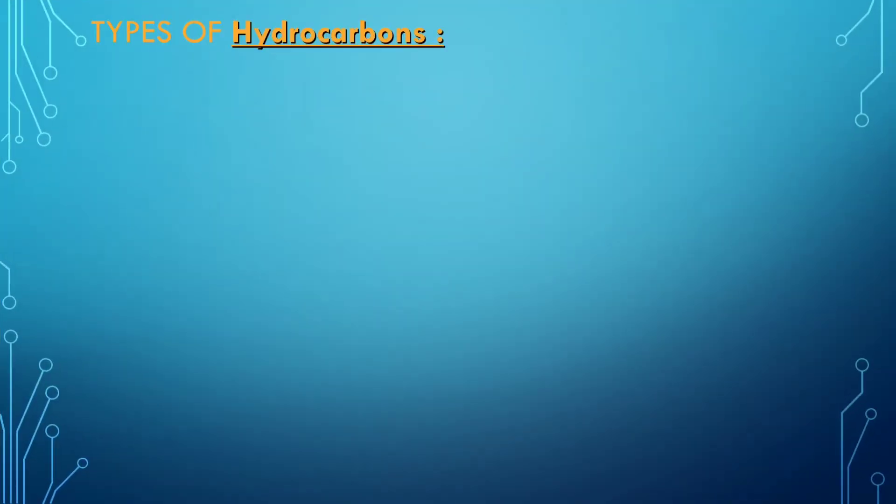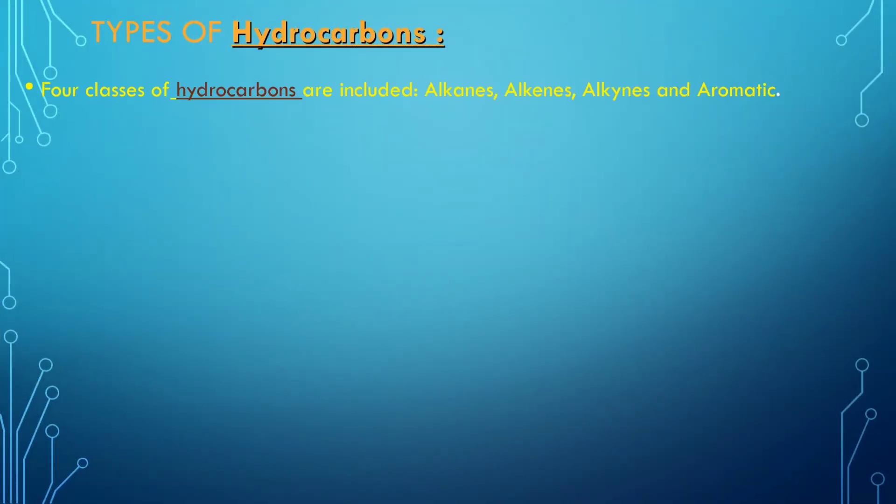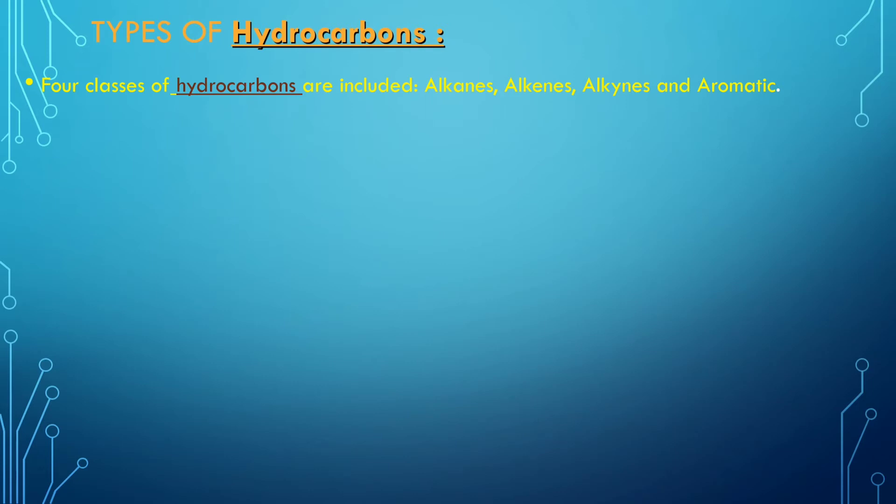Types of hydrocarbons. Four classes of hydrocarbons are included: alkanes, alkenes, alkynes, and aromatic.